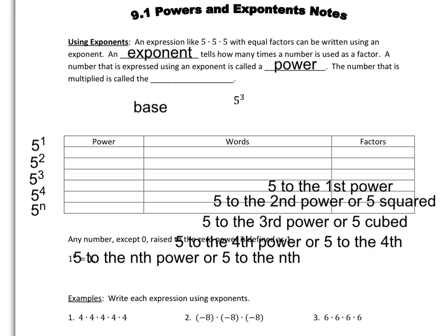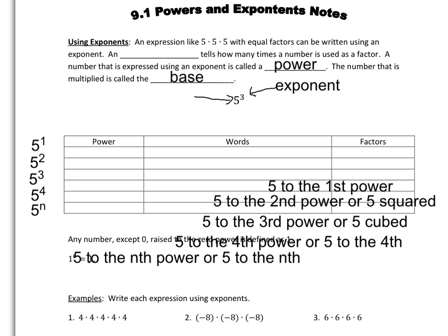The number that is being multiplied over and over again is called the base. If we look at this instance, we have 5 and a 3. That 3, raised up and a little smaller, is your exponent — it tells you how many times you're multiplying. Your 5, which is a little bigger, is your base, the number being multiplied over and over again. In this case, the 5 is being multiplied by itself 3 times. The whole thing together is called a power.